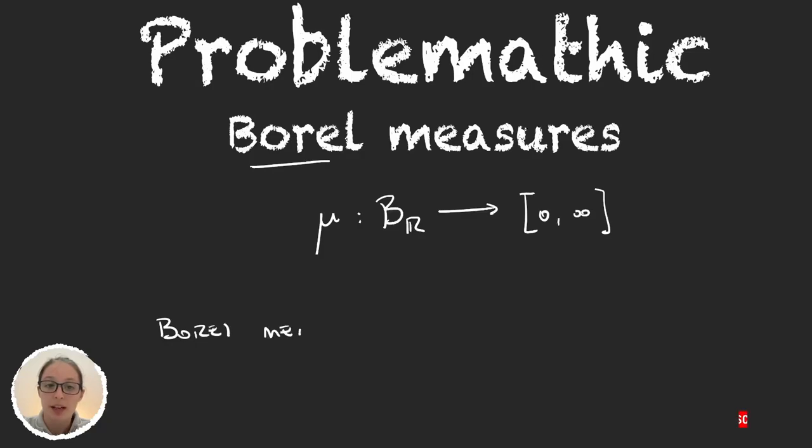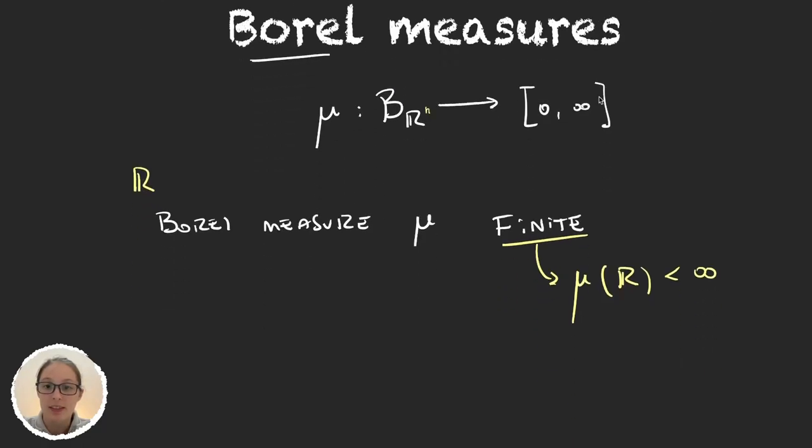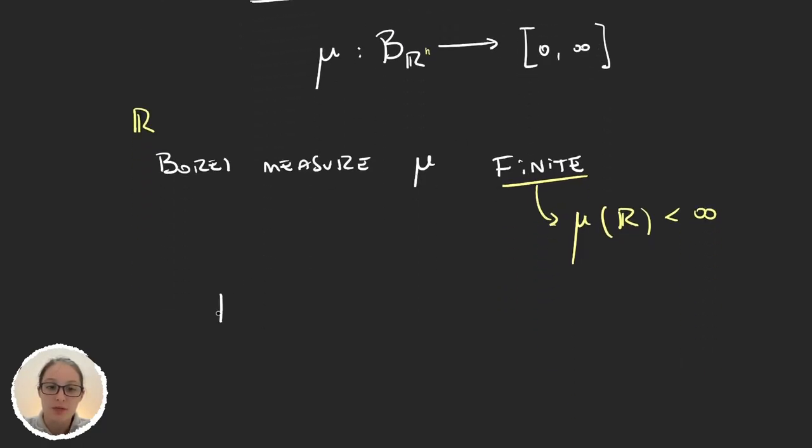Let's suppose that we have a Borel measure μ that is finite. Being finite means that the measure of the whole set, in this case we are working with the real numbers, is finite. This applies obviously for the Borel measures over ℝⁿ, but for now we're just gonna focus on the real numbers. And let's say that given this measure we define a function F(x) as the measure of the interval (-∞, x], closed in x and open obviously in minus infinity.